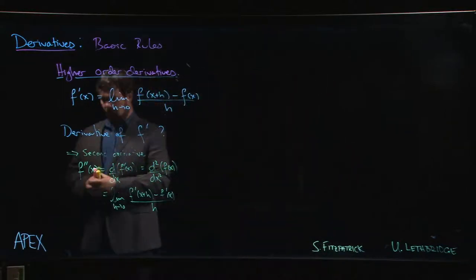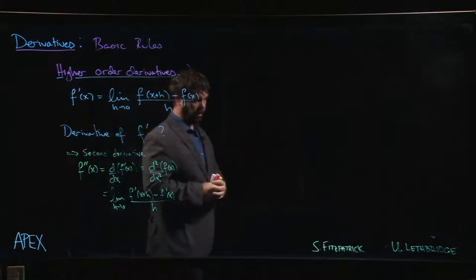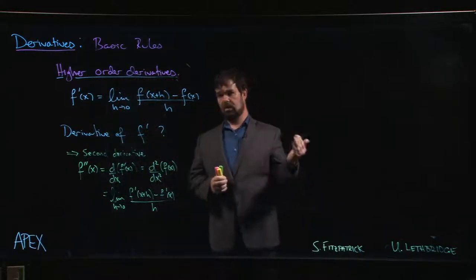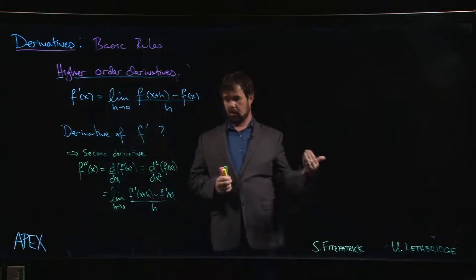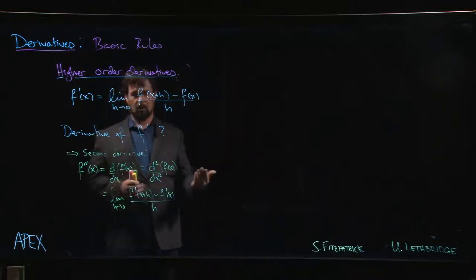The second derivative also has some geometric meaning. We know that the first derivative tells us something about slope—slope of tangent line—sort of tells us the rate at which the y value is increasing with respect to the x value on the graph of some function.